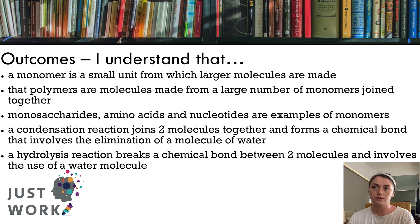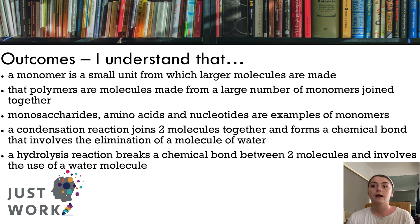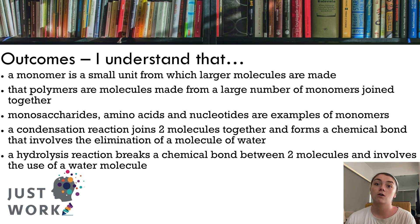The outcomes are: I understand that a monomer is a small unit from which larger molecules are made; that polymers are molecules made from a large number of monomers joined together; monosaccharides, amino acids and nucleotides are examples of monomers; a condensation reaction joins two molecules together and forms a chemical bond involving the elimination of a molecule of water; and a hydrolysis reaction breaks a chemical bond between two molecules with the use of a water molecule. So those are the outcomes we're focusing on today. Let's get started.